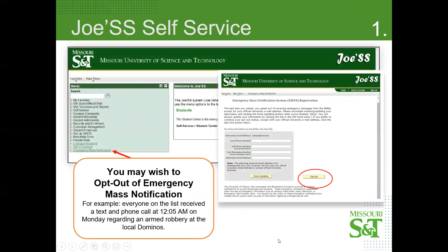Once you've taken care of the e-consent, you might want to go to the Emergency Mass Notification section and probably opt out of receiving phone calls, text messages, and things like that. Because if you're not located in the Rolla area, you're probably not going to want to hear about a middle-of-the-night robbery.